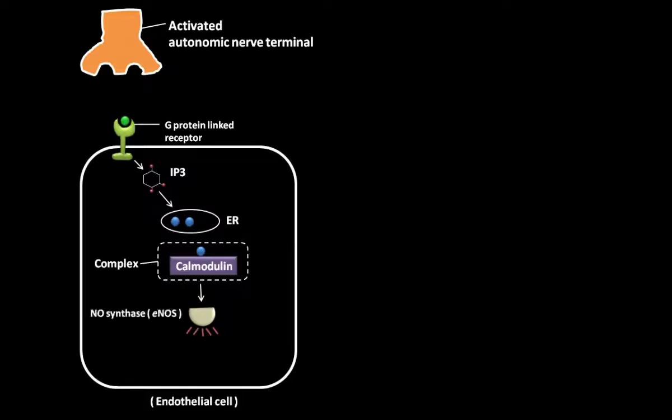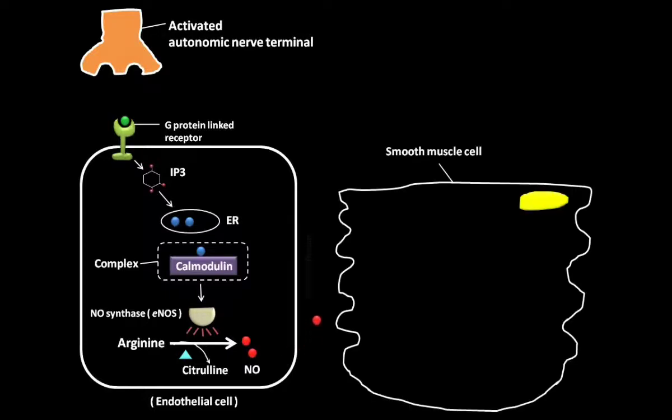Then, the stimulated ENOS catalyzes a deamination reaction in which the amino acid arginine produces nitric oxide and citrulline. The gas nitric oxide then diffuses rapidly across the membranes and reaches the cytosol of the adjacent smooth muscle cell.